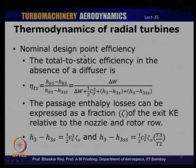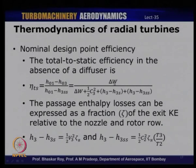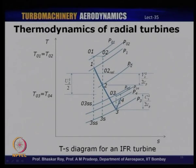Now that we have discussed nominal design conditions, remember that the velocity triangles shown for a typical radial flow turbine correspond to nominal operation — zero incidence at inlet and no deflection at exit. For the nominal design, we define total-to-static efficiency: η_TS = (H01 − H03) / (H01 − H3,S) = ΔW / (ΔW + ½C3² + (H3 − H3,S) + (H3 − H3,SS)).